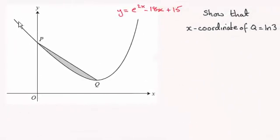Hi, now for this question we're given this curve here y equals e to the power 2x minus 18x plus 15 and told that it has a minimum turning point at Q. We've got to show that the x-coordinate of Q is the natural log of 3.